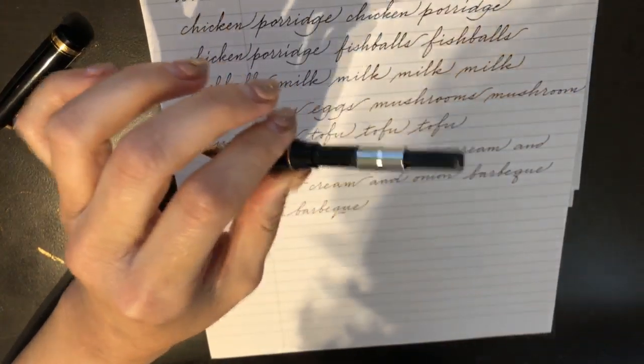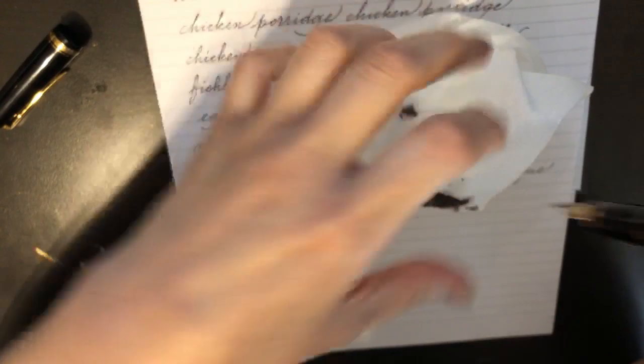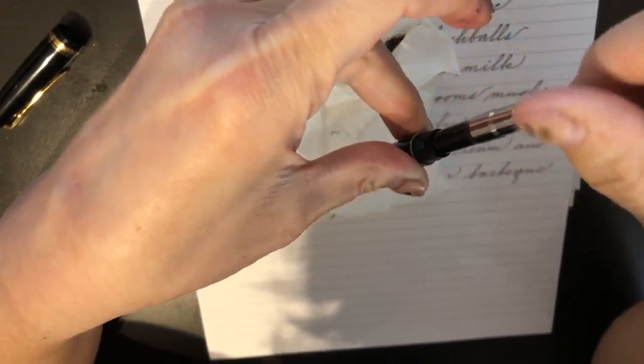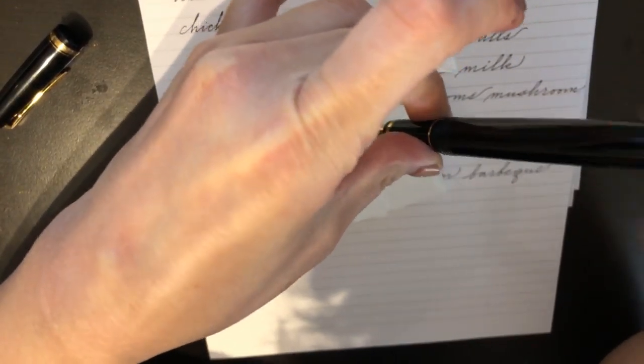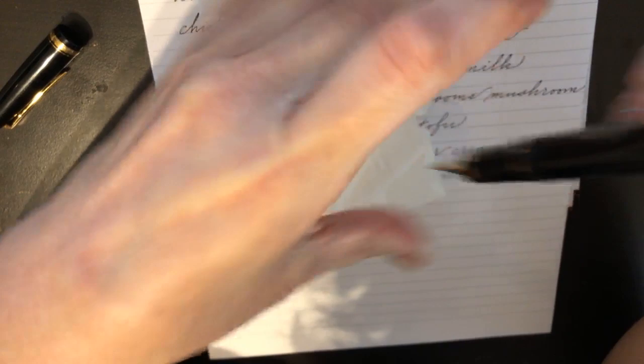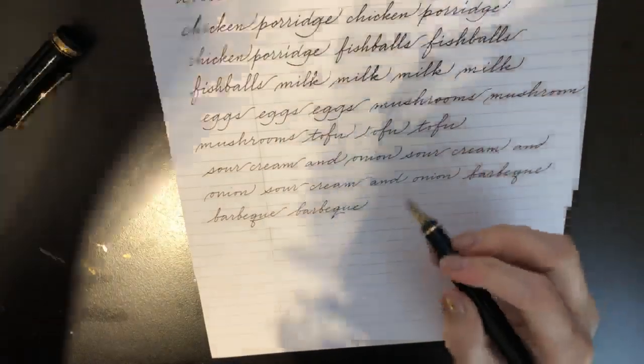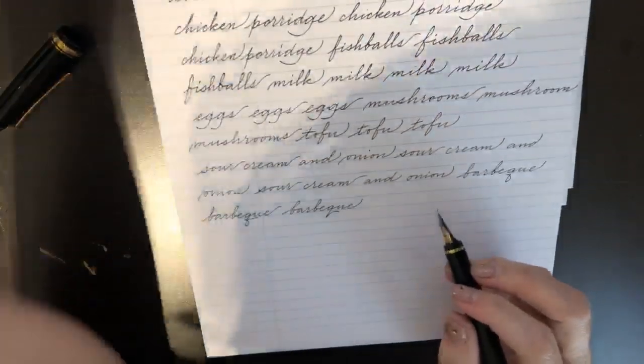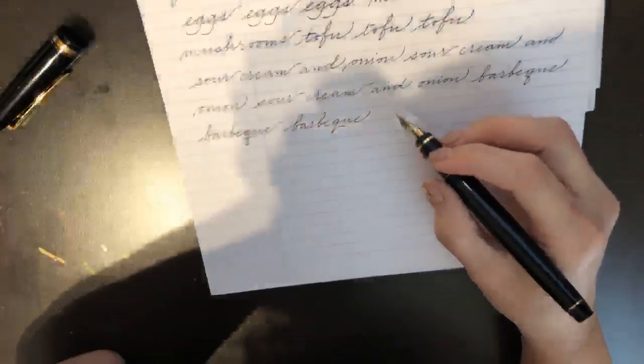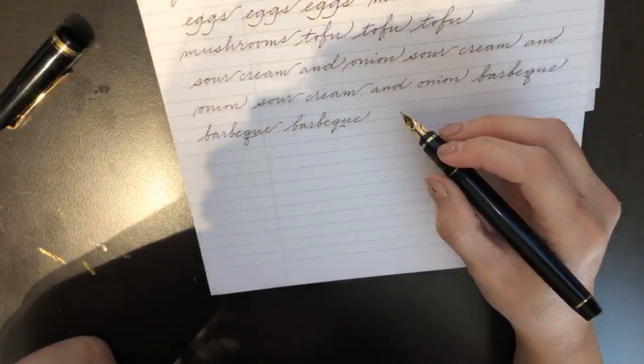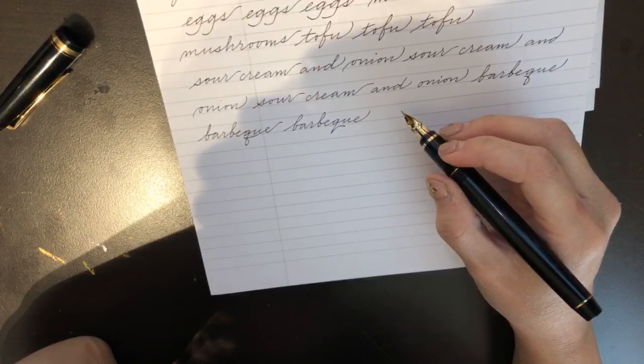The only problem is it dries up frequently. I don't know why. So I occasionally have to do this. Why are you writing horseradish? See, I'm just forcing ink to come out like that. So next, it's gonna write really well. What is your favorite meal to cook?